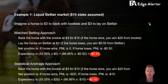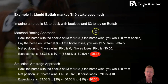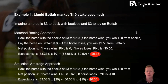Let's bring that out through a couple of examples — feel free to pause the video if you want to read the slides in more detail. Example one: let's imagine Betfair is liquid — meaning the spread is tight and there's a good amount of size to back and lay. We'll use $10 stakes. Imagine a horse is $3 to back with the bookies and $3 to lay on Betfair. It's relatively rare to get that exact price, but let's assume it for this example.